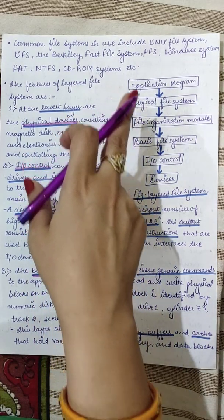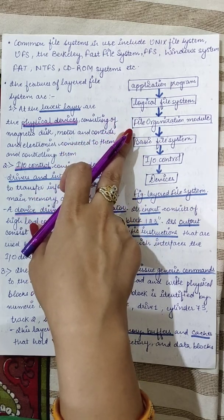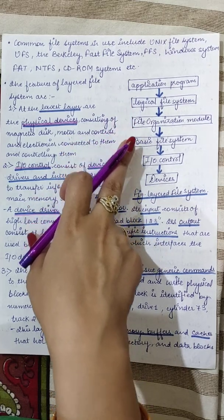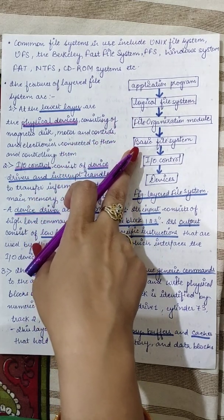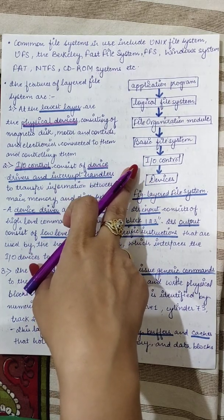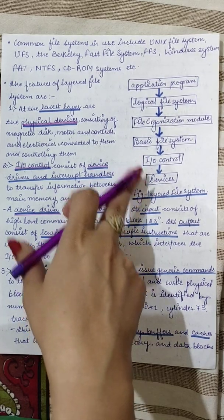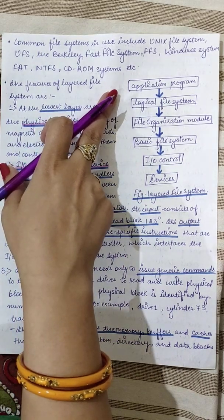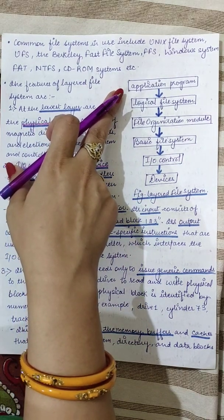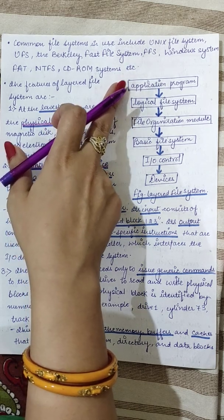The layers from top to bottom are: application program layer, logical file system, file organization module, basic file system, I/O control, and devices. The topmost layer is the application program layer, which refers to any user program.